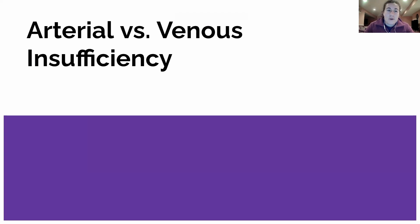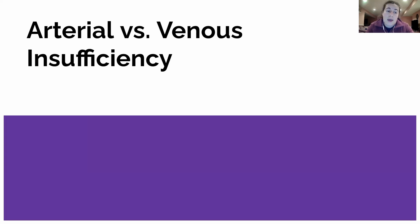Today we're going to be going over arterial versus venous insufficiency ulcers. This is probably the most common ulcers you're going to see on the boards. There's going to be a lot of questions about the difference between arterial versus venous insufficiency because there's a lot of things that could trip you up on this.